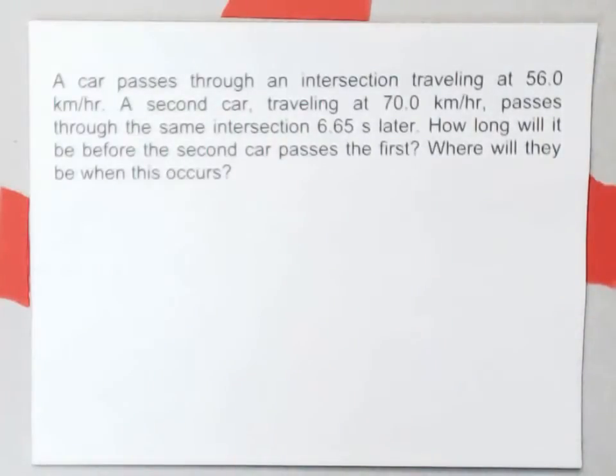A car passes through an intersection traveling at 56 kilometers per hour. A second car traveling at 70 kilometers per hour passes through the same intersection 6.65 seconds later. How long will it be before the second car passes the first and where will they be when this occurs?